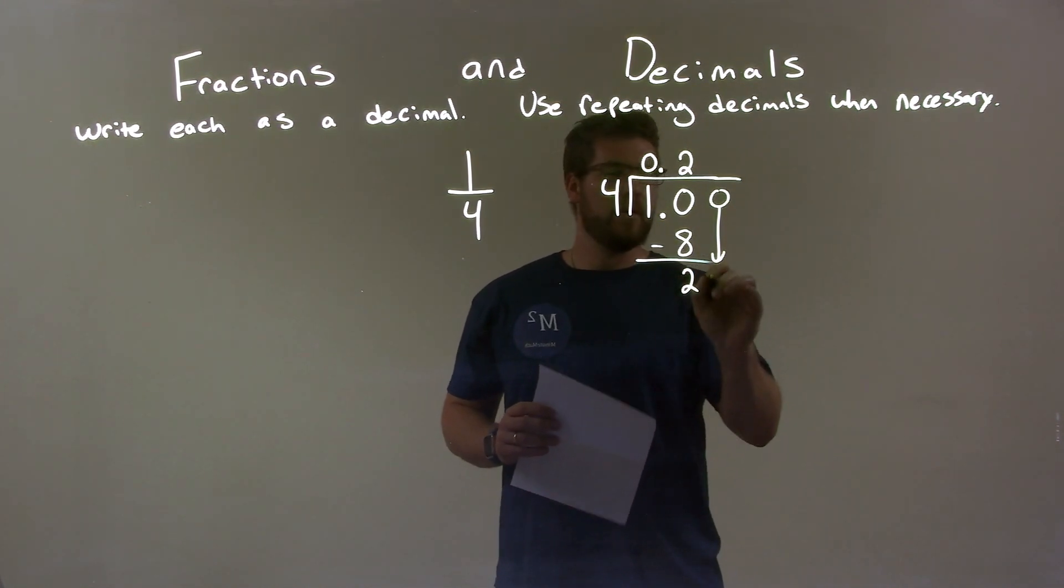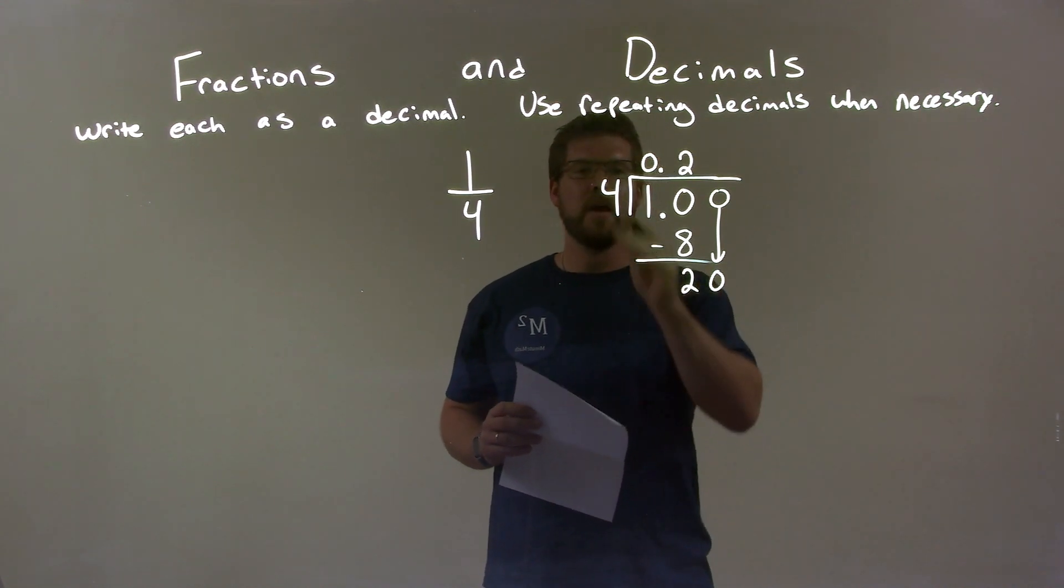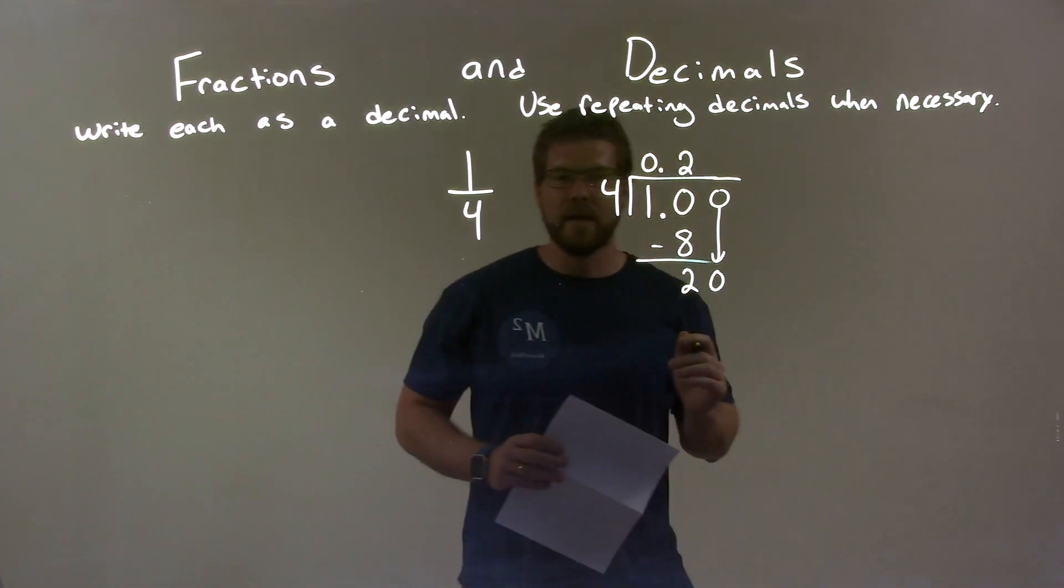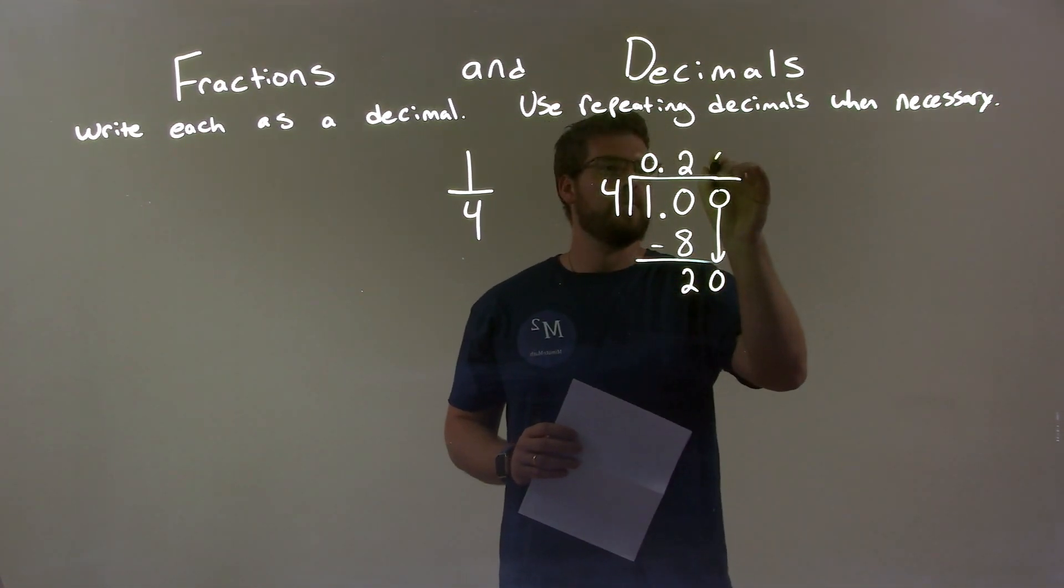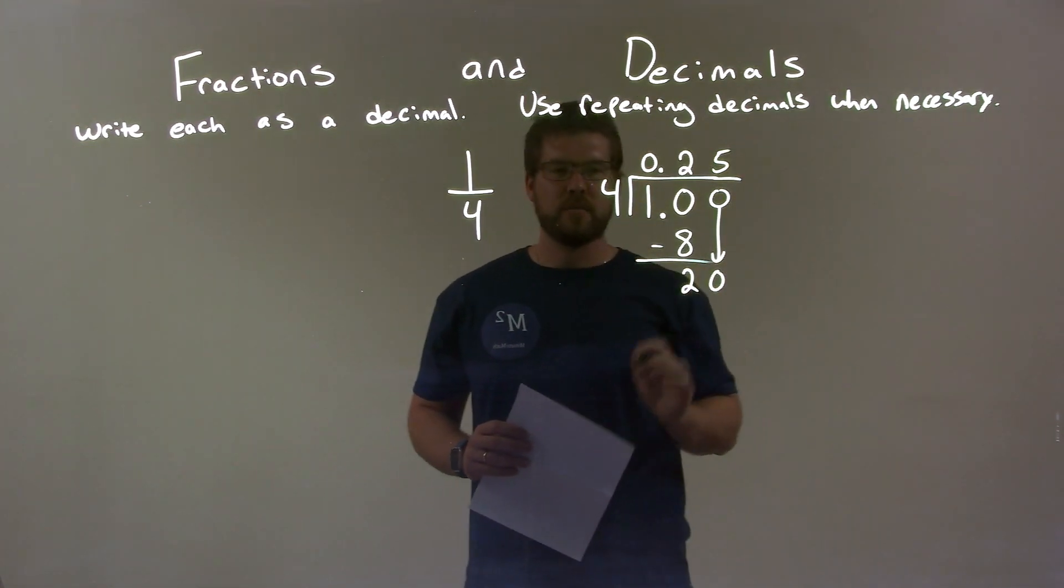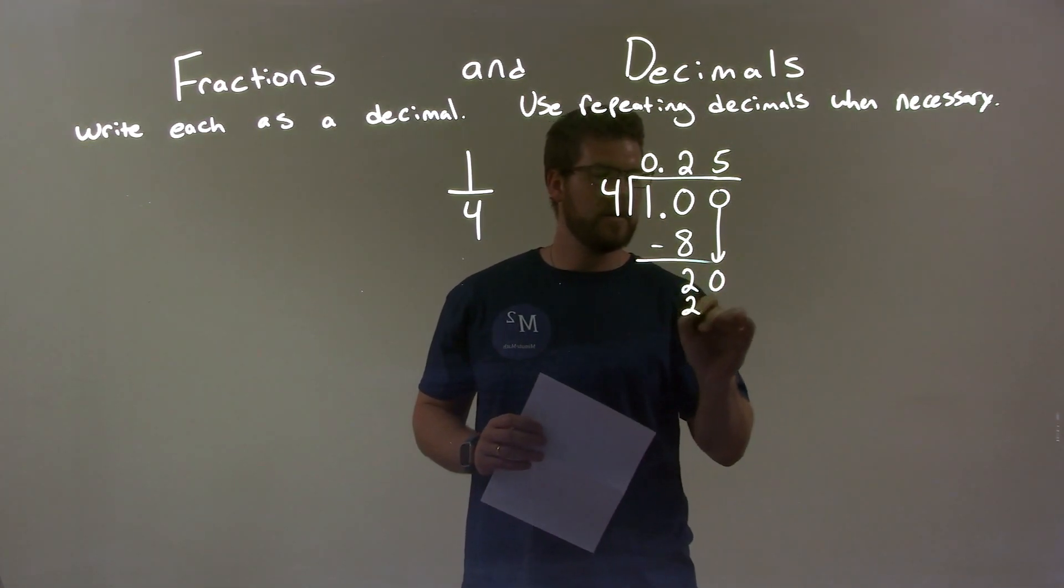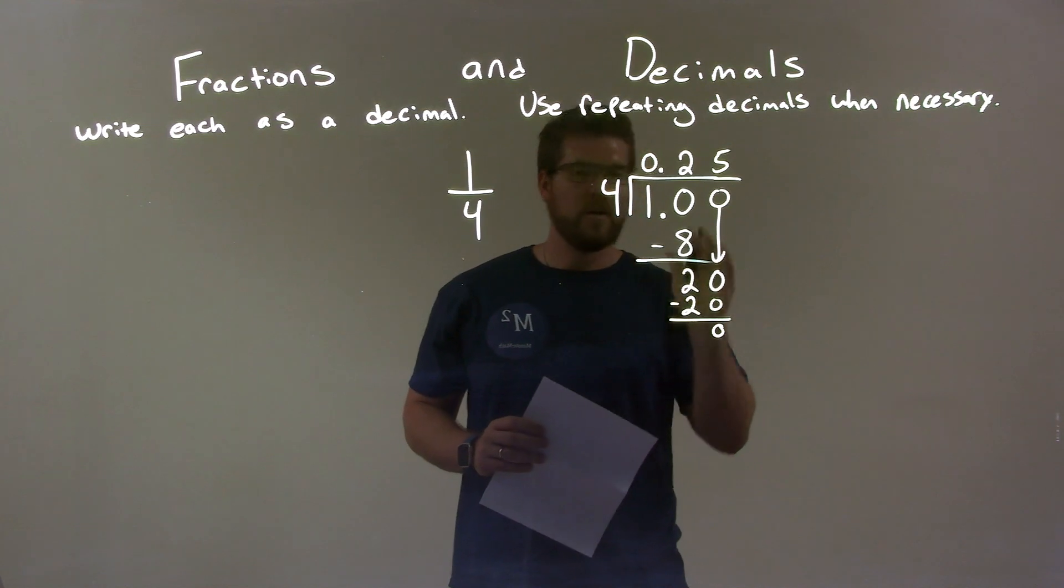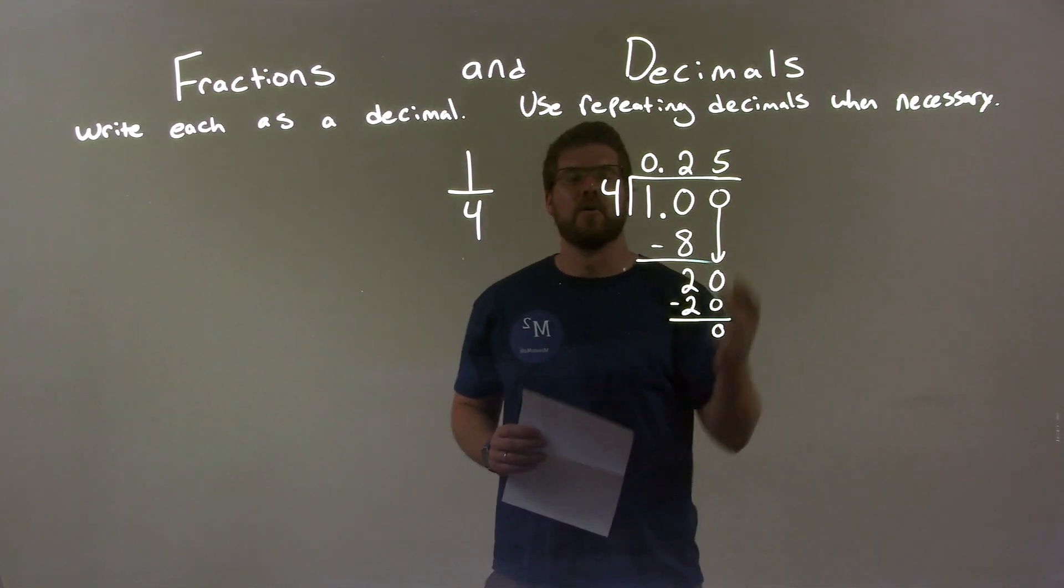Four goes into, well, the zero comes down to twenty. How many times does four go into twenty? That's going to be five times. So we have five right here. Five times four is twenty. And we end with a zero, so we are done. We got our answer right here,